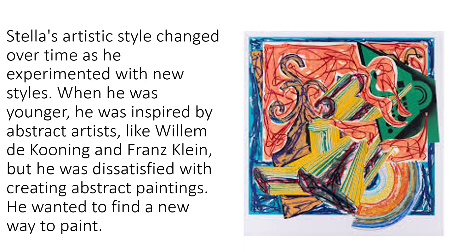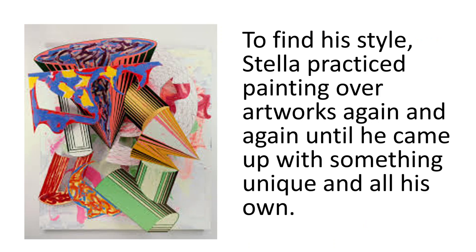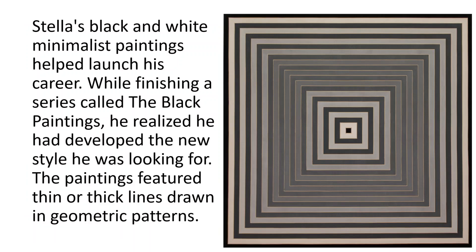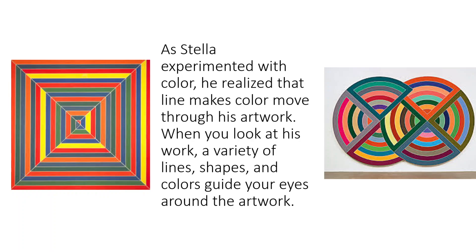Stella's unique style changed over time. He experimented with new styles and was attracted to some of the more unconventional artists. But he wasn't just wanting to create abstract work — he started looking for new ways to express himself and began practicing by painting over his previous work. When he started using color, we see those primary and secondary colors come in, along with the same basic use of shape he had been using in the black painting series.